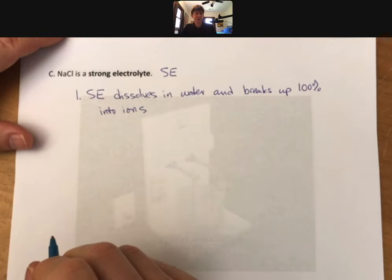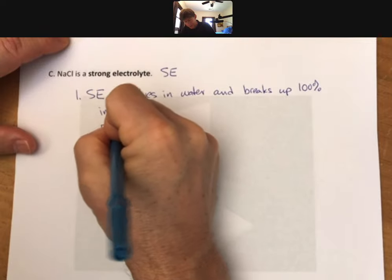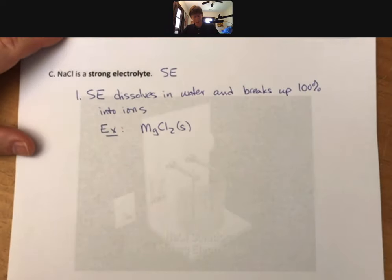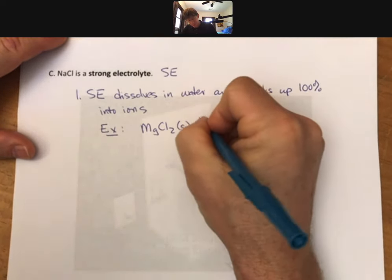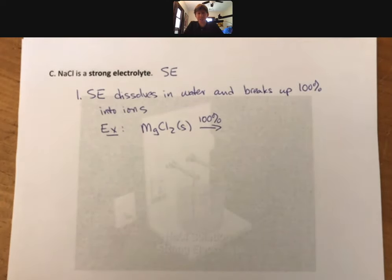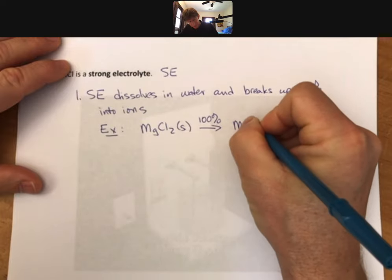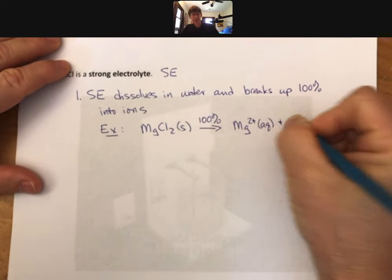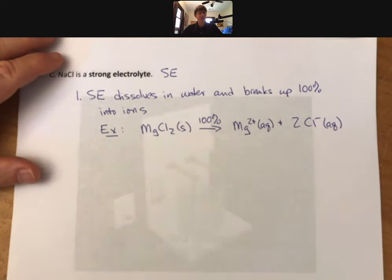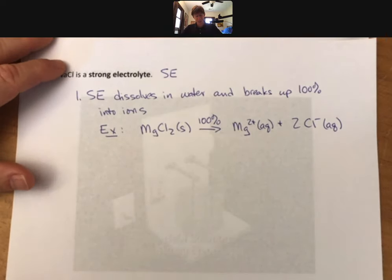So let's do a dissolving reaction for something else. This time we'll do magnesium chloride. It is a solid on the reactant side. I'm going to write 100% on here as an added note that it breaks up 100%. It is a strong electrolyte. And I get Mg2+(aq) and 2Cl-(aq). Everything is aqueous on that product side. And since these are ions, that's what we put.